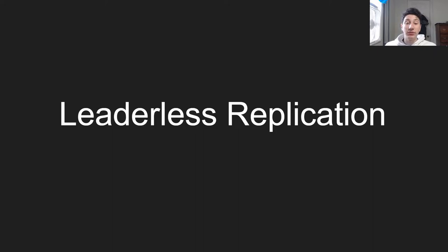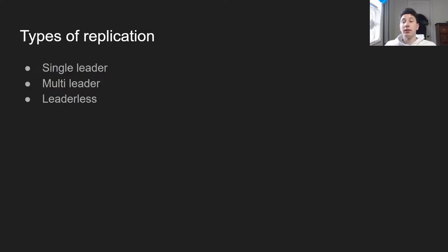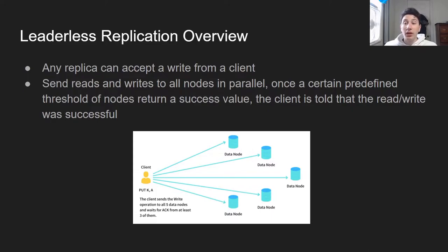Today we're going to be doing leaderless replication, which is the third type of replication I will be discussing. To give it a quick overview: instead of writes going to only one place and reads coming from only one place like in multi-leader replication, writes are actually going to be sent to every single replica in parallel, and reads are going to be taken from every single replica in parallel — or at least a certain amount of them. Unlike single-leader and multi-leader replication, we're dealing with a lot of network calls at once here.